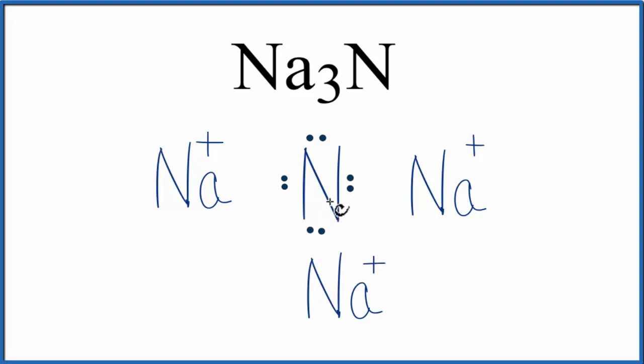The nitrogen, it's gained 3 valence electrons. Electrons are negative, so it has a 3- charge. And this negative charge here attracts the positive. That's what forms the ionic bond.